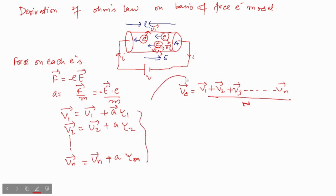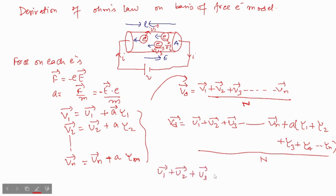Now you can put the values of V1, V2, V3 and so on up to Vn from all these equations. So Vd will be U1 plus U2 plus U3 up to Un, plus you can take A common, that is equal for every electron, times tau 1 plus tau 2 plus tau 3 up to tau n upon n.